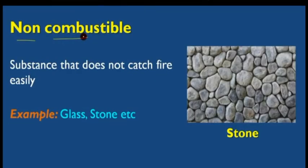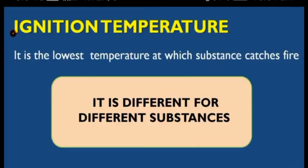Next comes non-combustible substance. A non-combustible substance is one that does not catch fire easily. Examples include stone and glass. These are called non-combustible substances because they do not catch fire easily.